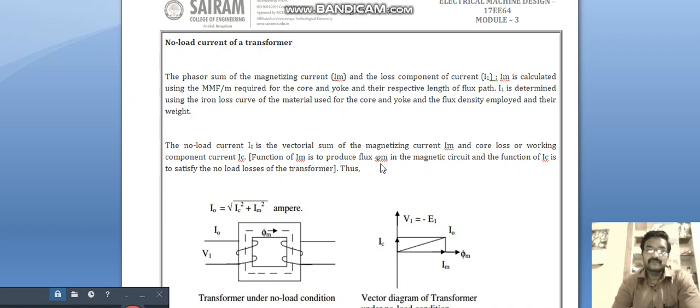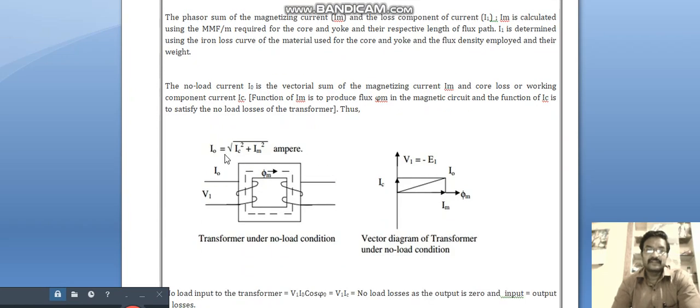The function of Ic is to satisfy the no-load losses of the transformer. So I naught is equal to square root of Ic square plus Im square ampere.